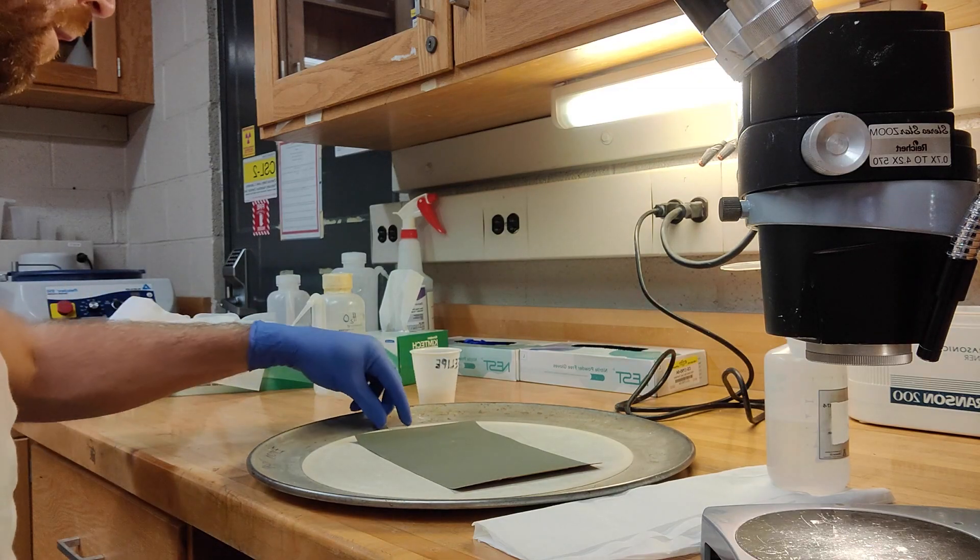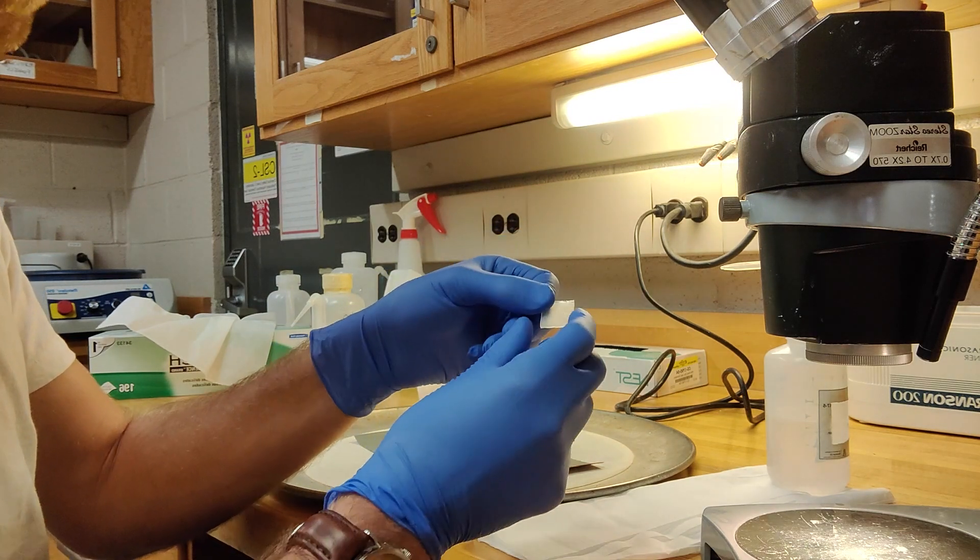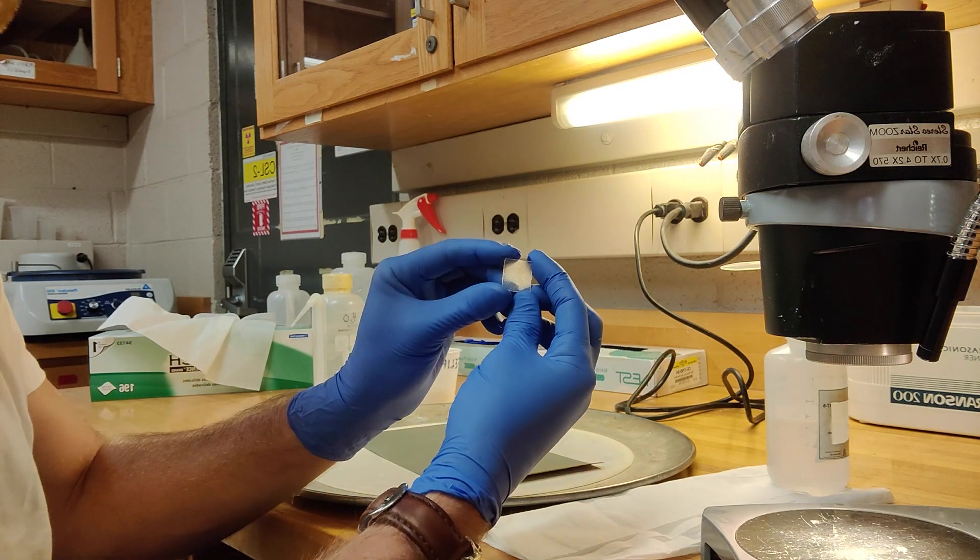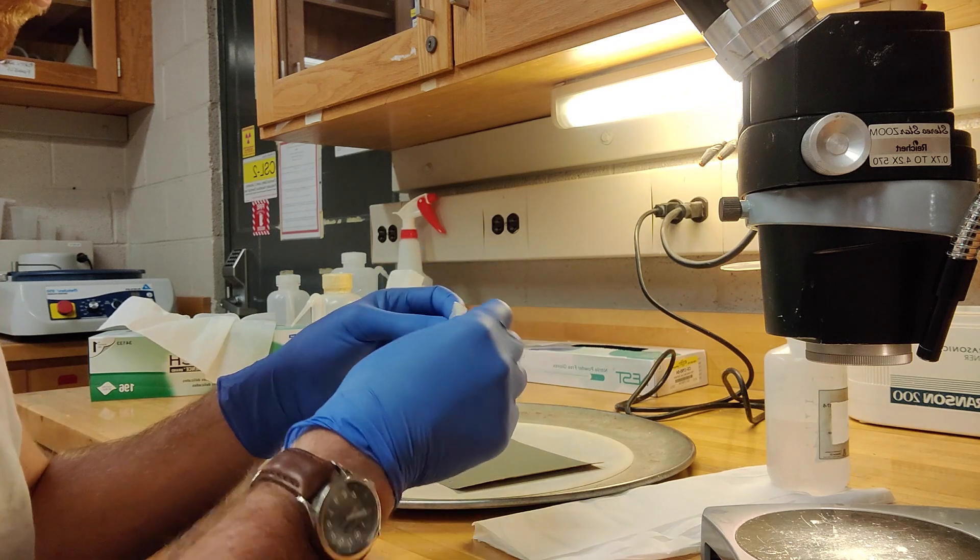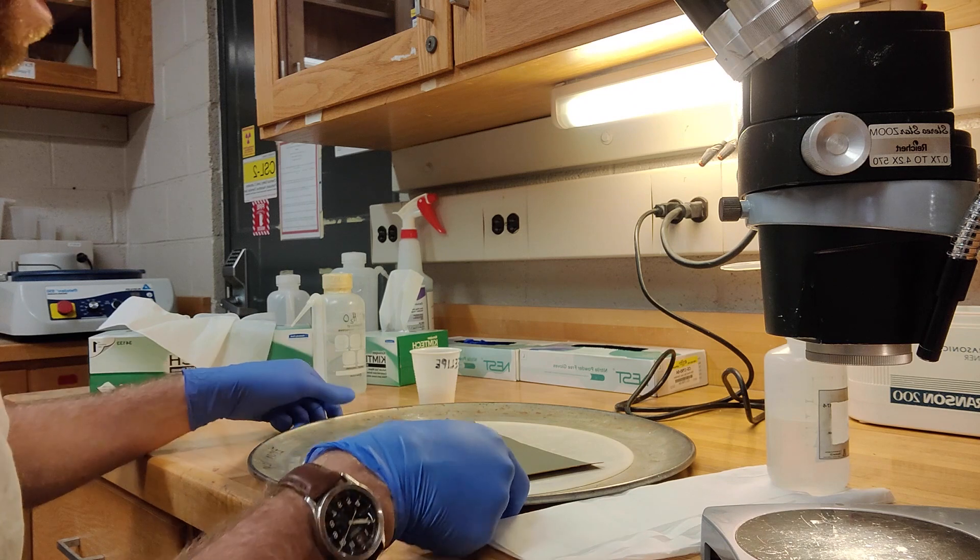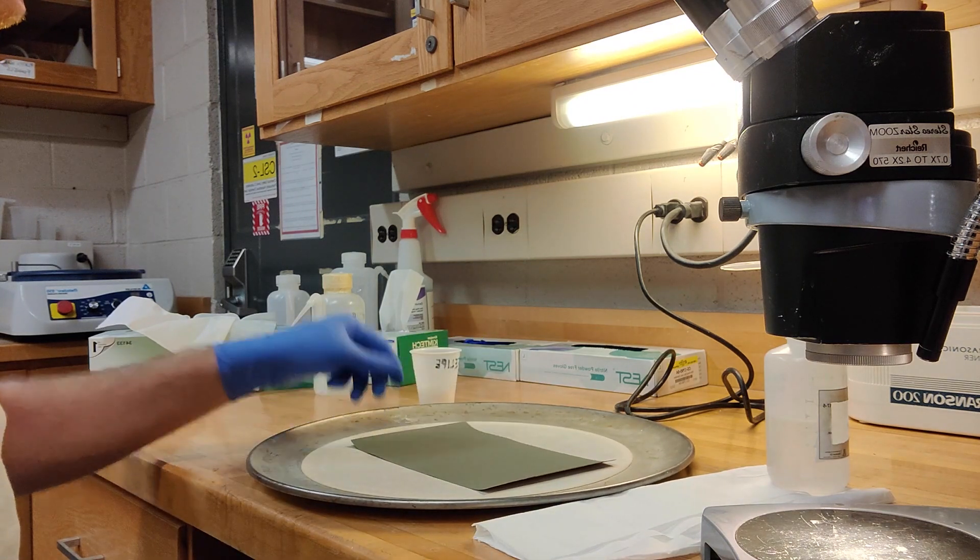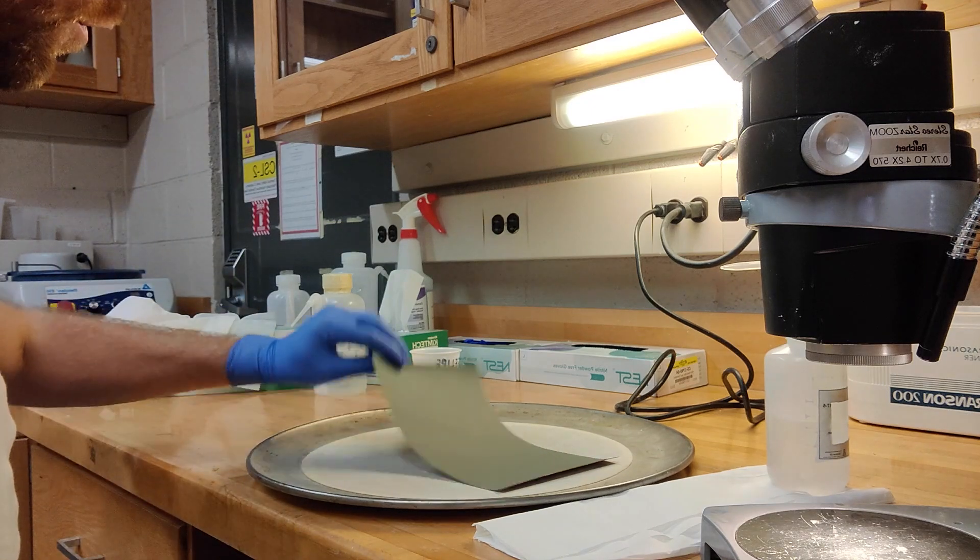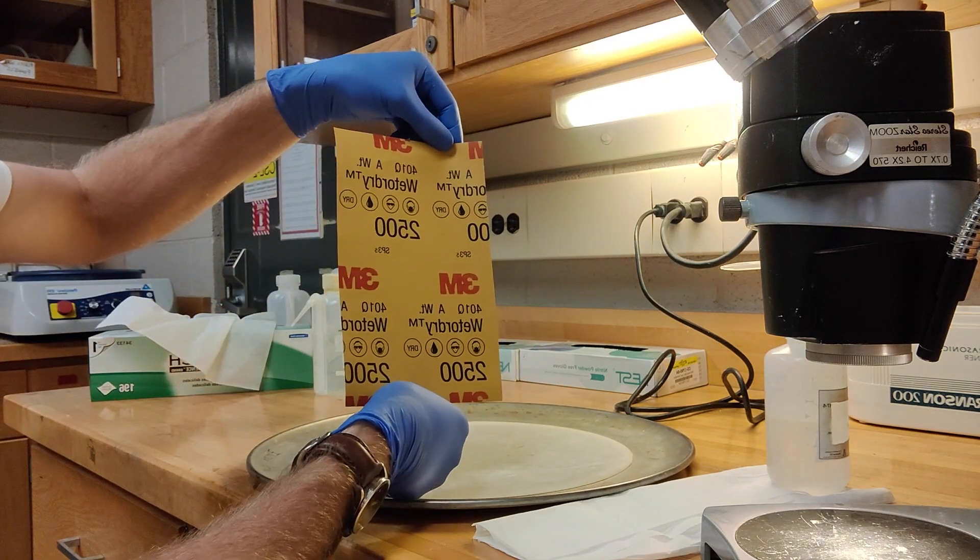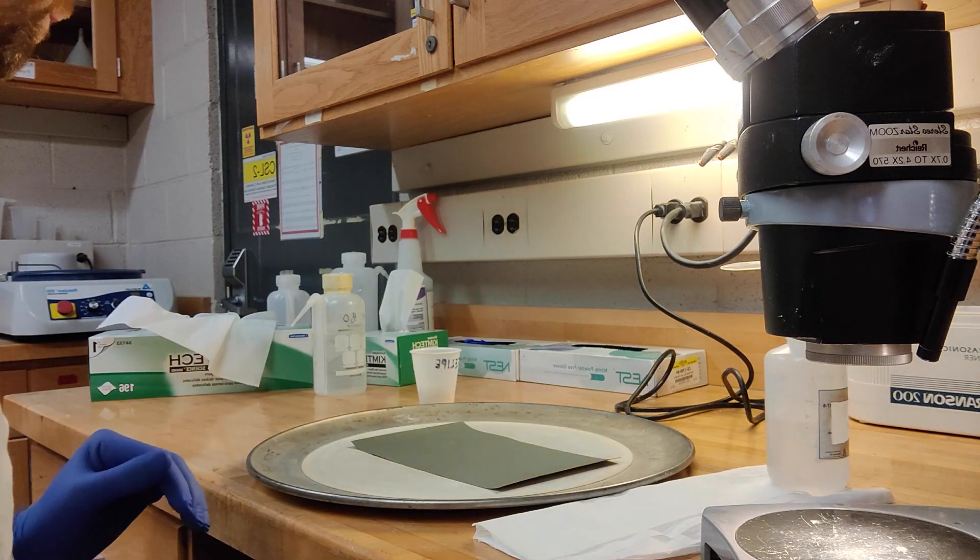Once we have done with our samples, we've mounted them in epoxy, and they're nicely labeled at the back, we can begin the polishing process. The first thing we do to polish them is we grind them down using grit paper at 2500 grit, and we grind it down to expose the internal section of the apatite.